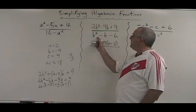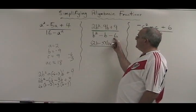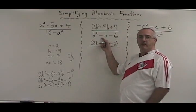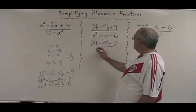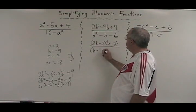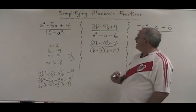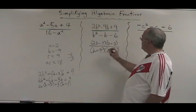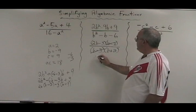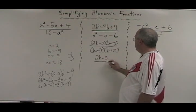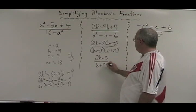Factoring the denominator, what two numbers multiply to give negative 6 and add to give negative 1? That would be negative 3 and 2, so we have B minus 3, B plus 2. Cancelling, we have a B minus 3 on the bottom and on the top, so our final answer is 2B minus 3 over B plus 2.